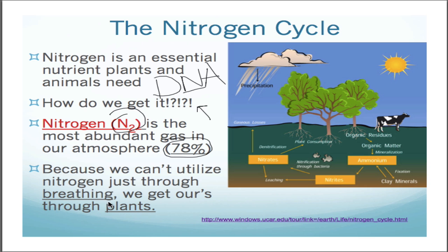So what we have to do is get our nitrogen through plants — things that we eat. Key things to remember: we need nitrogen, and without it we wouldn't be around. There's a ton of it in the atmosphere, but we can't use that nitrogen right away — we have to get it through plants. So the next question should be: how do plants get it?